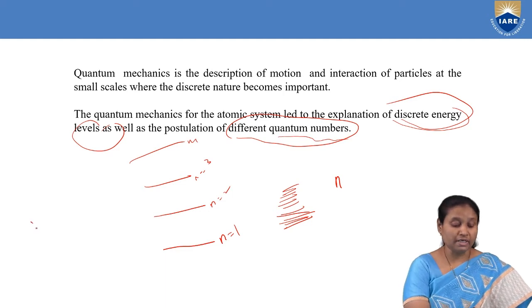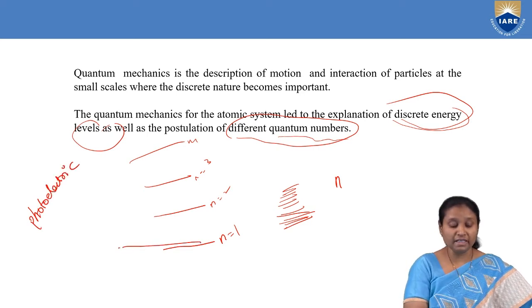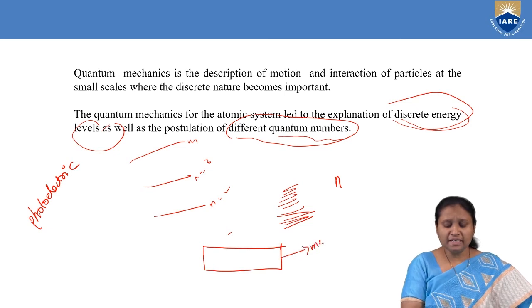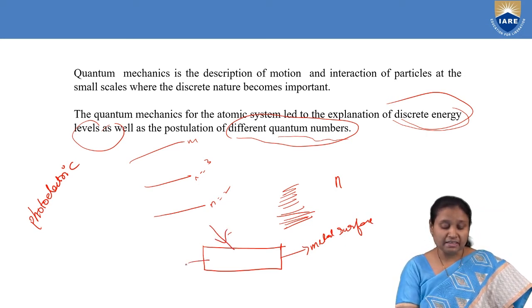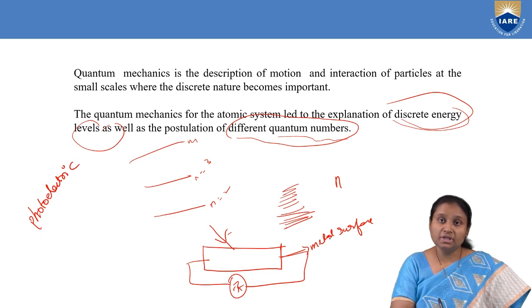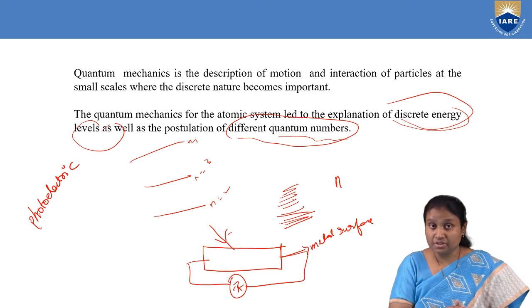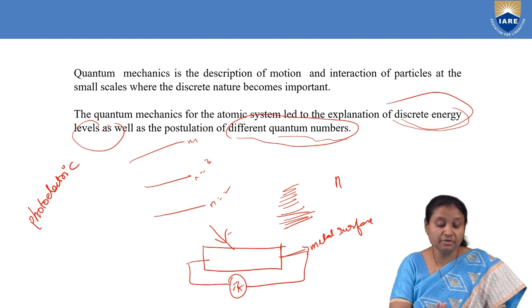Many phenomena can be explained using quantum mechanics. In the photoelectric effect, given by Einstein, when a metal surface is exposed to high-frequency radiation, a flow of current is observed. This is because light radiation made up of photons — particles — interacts with electrons of the metal surface. The interaction between photons of light radiation and electrons of the metal surface causes the current to flow.